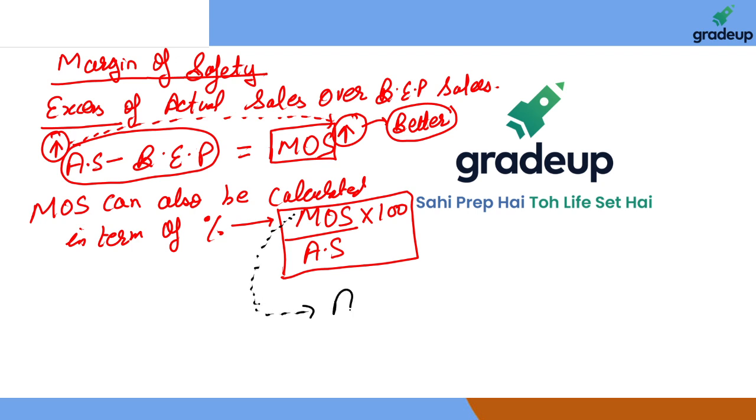Instead of margin of safety, I can write actual sales minus BEP sales. So margin of safety equals actual sales minus BEP sales divided by actual sales into hundred.